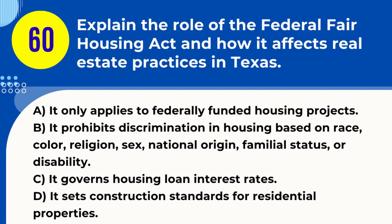Question 60. Explain the role of the Federal Fair Housing Act and how it affects real estate practices in Texas. A. It only applies to federally funded housing projects. B. It prohibits discrimination in housing based on race, color, religion, sex, national origin, familial status, or disability. C. It governs housing loan interest rates. D. It sets construction standards for residential properties. Answer: B. It prohibits discrimination in housing based on race, color, religion, sex, national origin, familial status, or disability. Explanation: The Federal Fair Housing Act plays a crucial role in Texas real estate by prohibiting discrimination in the sale, rental, and financing of housing based on specific protected classes.